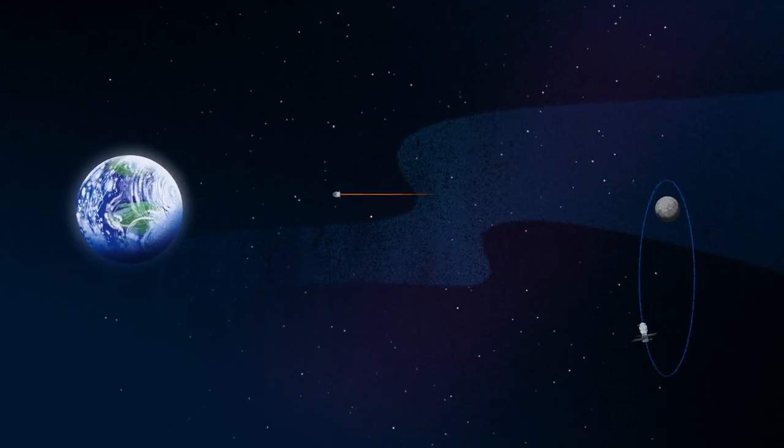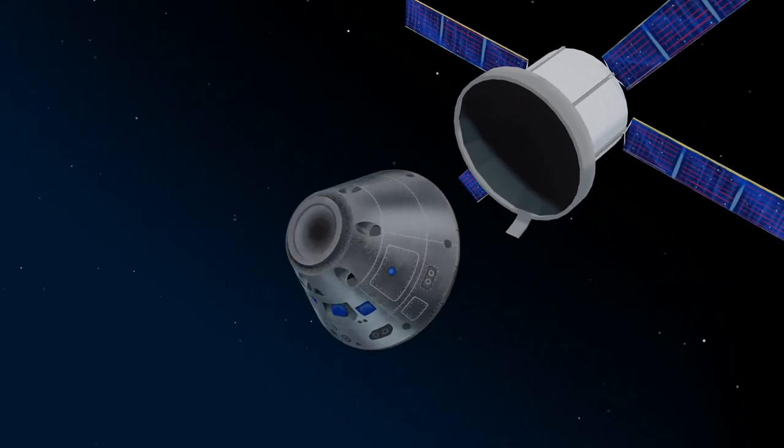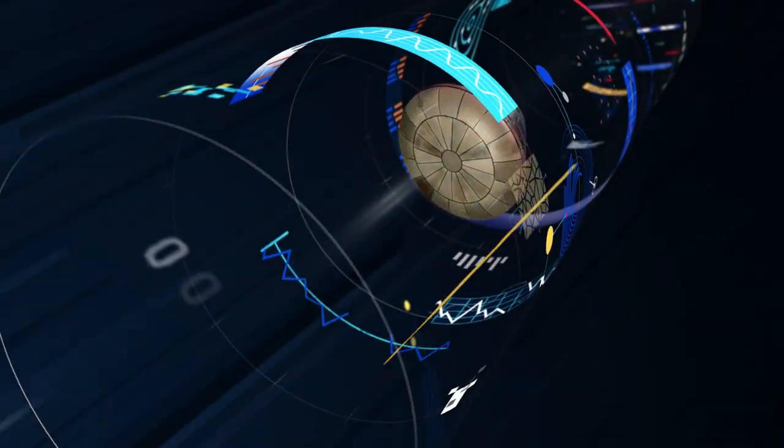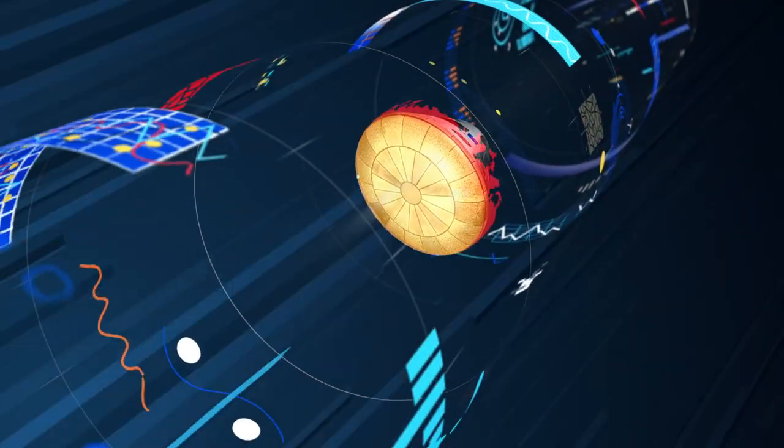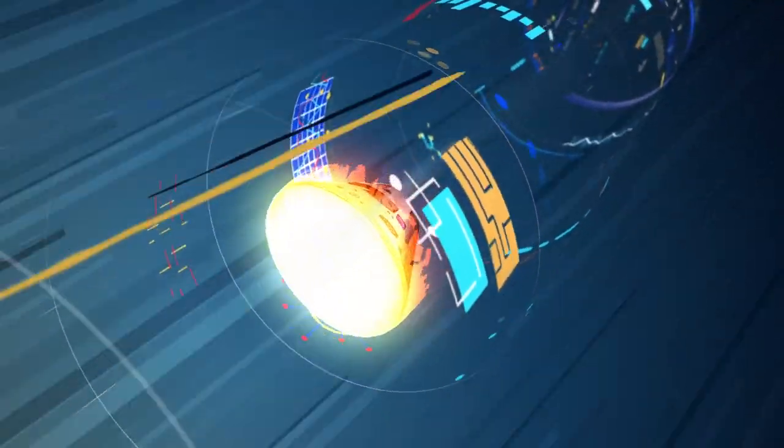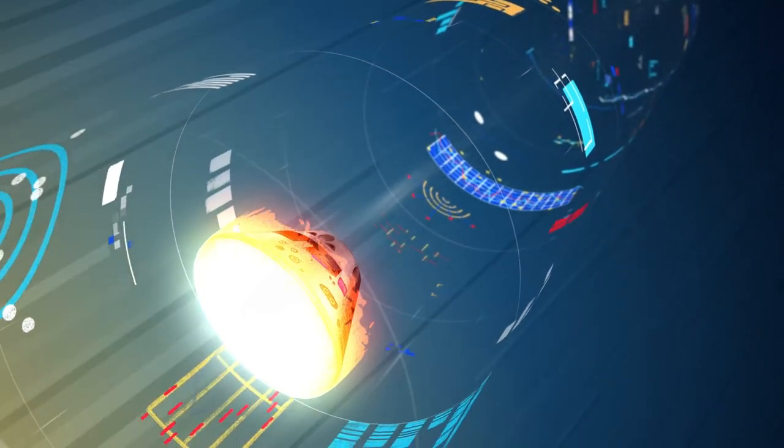As they near the end of this journey, the service module is released, and the crew module is oriented heat shield first. Entering Earth's atmosphere at 25,000 miles per hour, the friction of air slows Orion considerably, while also subjecting it to temperatures of 5,000 degrees.